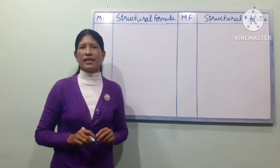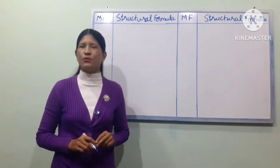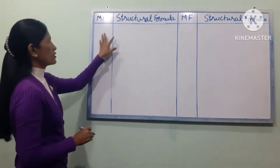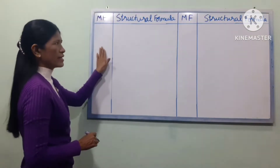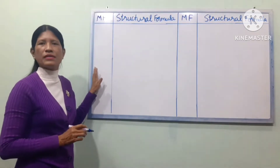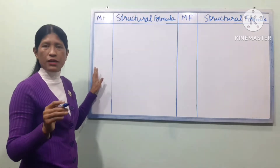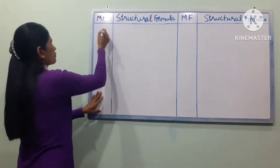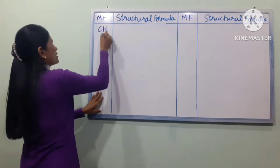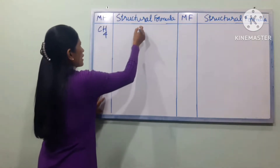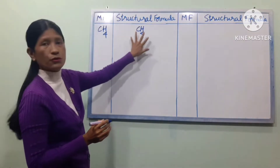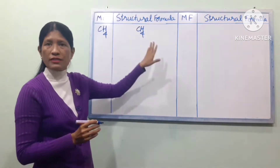Carbon and hydrogen will be the first to show the structural formula. The molecular formula will be put together. We can find the general formula CnH2n+2, which is the molecular formula. The formula CH4 is the structural formula.